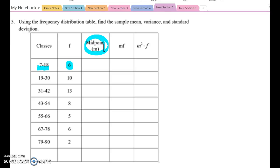Then midpoint, you combine lower limit and upper limit of each class and divide by 2. So this case, you do 7 plus 18 divided by 2. Then you will get the midpoint value of this class. So that value becomes 12.5 this case.